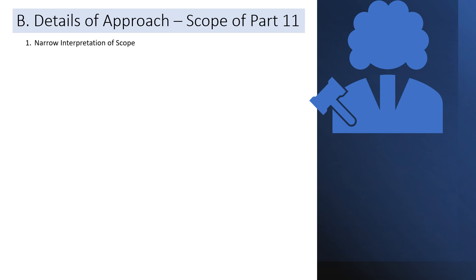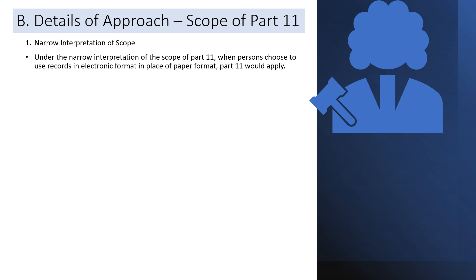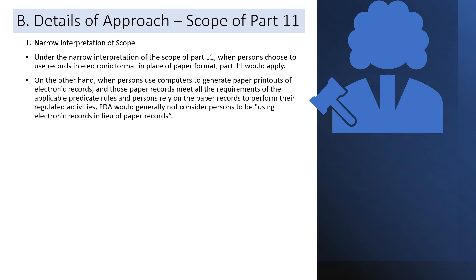Now we will discuss Section 2 — details of approach for the scope of Part 11. Under the narrow interpretation of the scope of Part 11, when persons choose to use records in electronic format in place of paper format, Part 11 would apply. However, when persons use computers to generate paper printouts of electronic records and rely on those paper records to perform regulated activities, FDA would generally not consider them to be using electronic records in lieu of paper records — so Part 11 predicate rules shall not be applicable for printed hard copies.